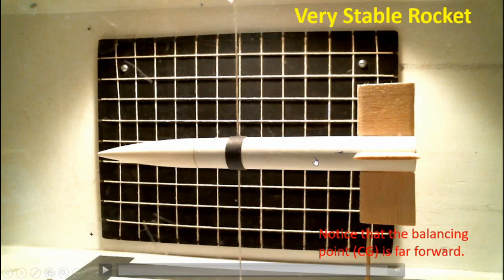I've added weight to the front of the rocket to move the center of gravity forward. It's actually three calibers of stability on this rocket, or three body diameters. So it should be very stable.